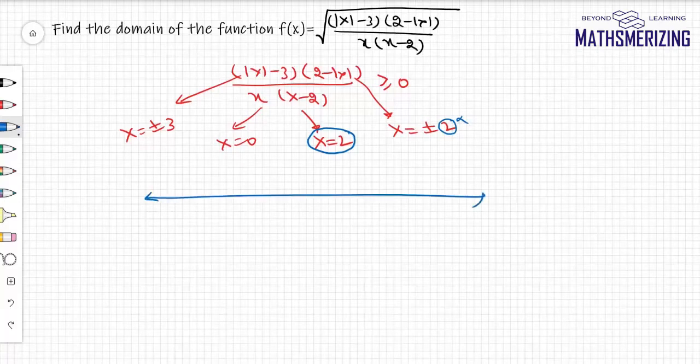So what I'll do is I'll plot these numbers on a number line. So this is minus 3, minus 2, 0, and then here it will be 3.